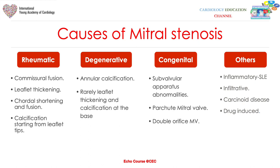The other causes of mitral stenosis are either degenerative, congenital, or others. Degenerative causes include annular calcification with leaflet thickening and calcification starting at the base of the leaflet at the annulus. For congenital causes, you have subvalvular apparatus abnormalities, parachute mitral valve, and double orifice mitral valve.